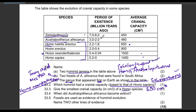When did A. africanus become extinct? You go back to the table — A. africanus existed up to 2.0 million years ago, so it became extinct 2 million years ago. You could also write 2,000,000 years ago, which is also fine.